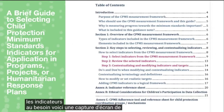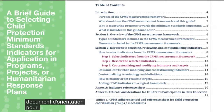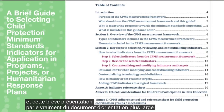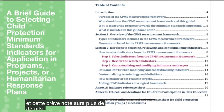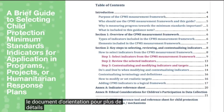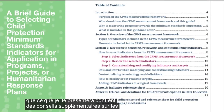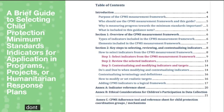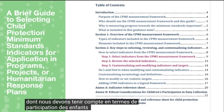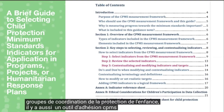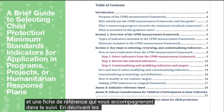Here is a screenshot of the table of contents of a brief guidance document for selecting the indicators for application in programs, projects, or humanitarian response plans. This presentation speaks to that wider guidance document, which has more details including additional guidance on do's and don'ts, an indicator reference sheet, ethical considerations for children's participation and data collection, and for child protection coordination groups, a CPMS adherence tool and reference sheet to support monitoring of selected indicators.